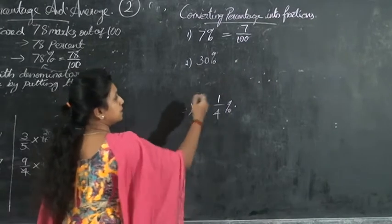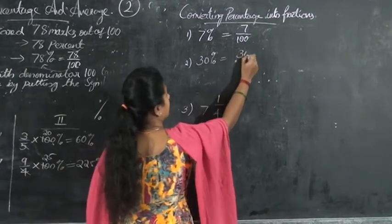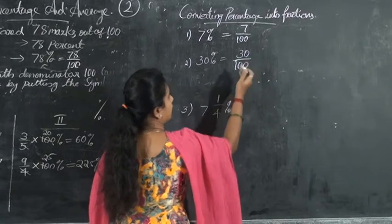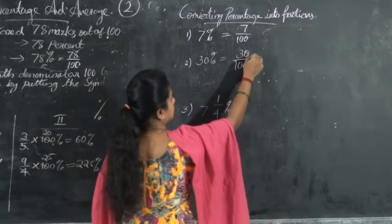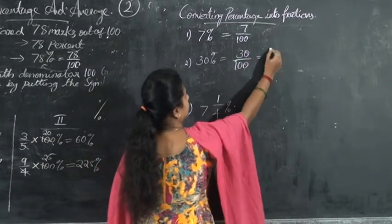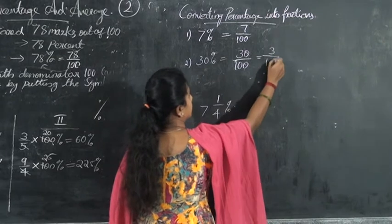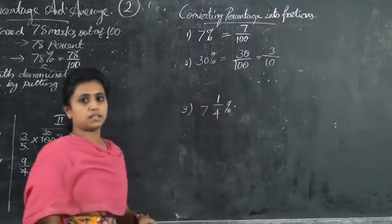30 percent means it is 30 by 100. You can then reduce this to its lowest term. If you divide both by 10, it becomes 3 by 10. So 30 percent equals 3 by 10.